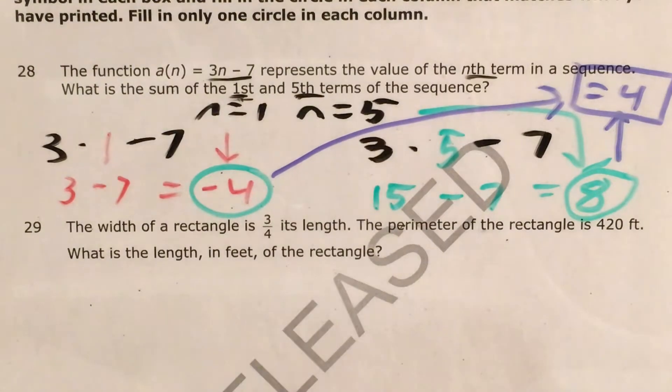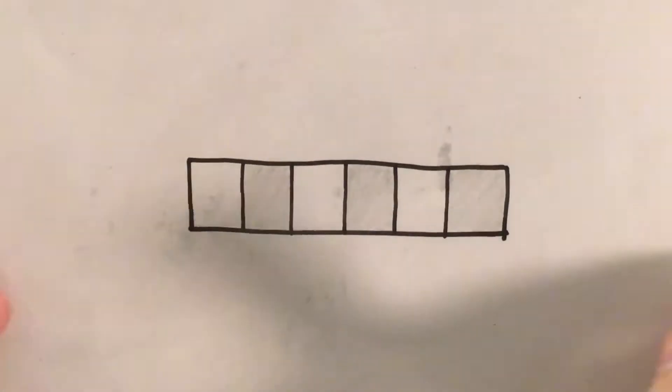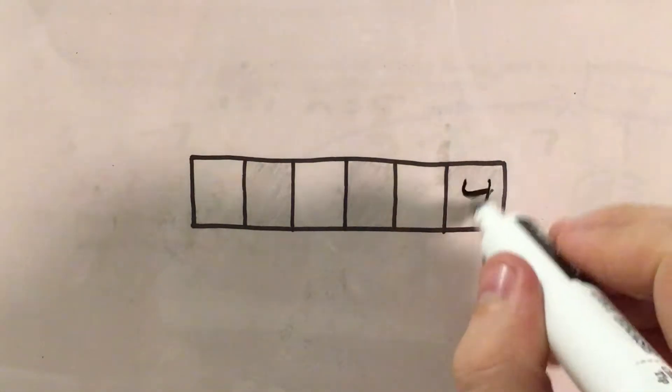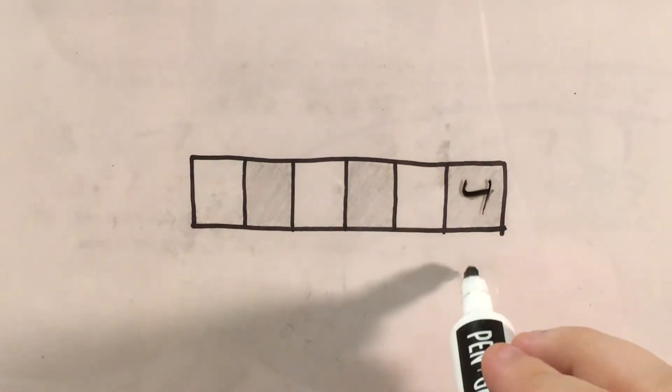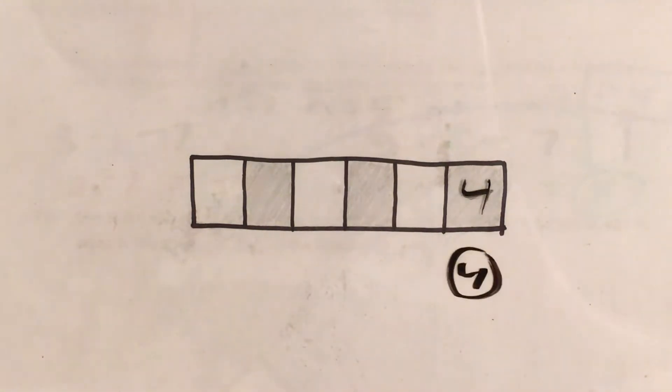we will need to practice putting this into the gridded response box. So there's that. My answer is just 4. So I write 4 in, find the 4 bubble underneath that, and bubble that in. And that's how I do a question like this, including putting my answer in the gridded response boxes.